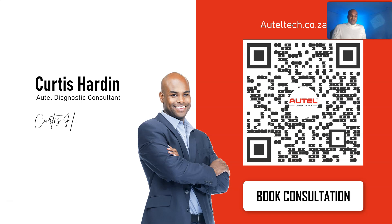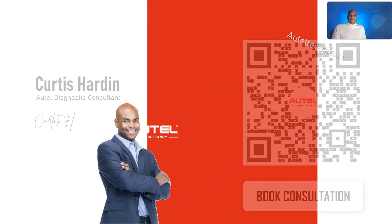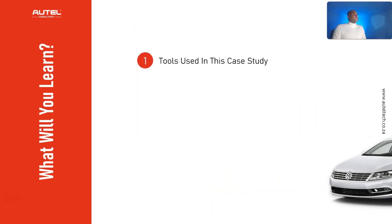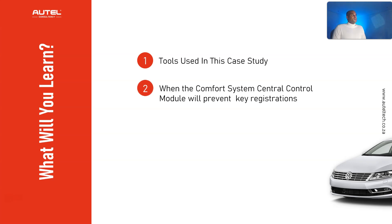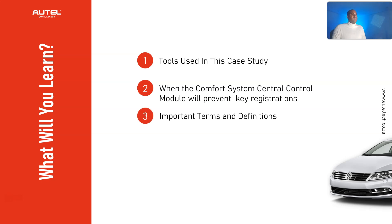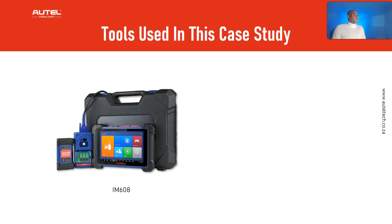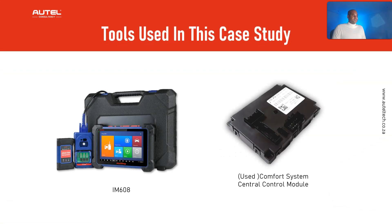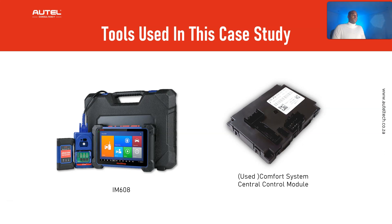If that's you, you can scan the QR code or head over to my website. What you're going to be learning today is: the tools used in this case study, when the comfort system central control module will prevent key registrations, the important terms and definitions related to the system, and the step-by-step process of module replacement and coding. The tools used are the IM608 and the used comfort system central control module.